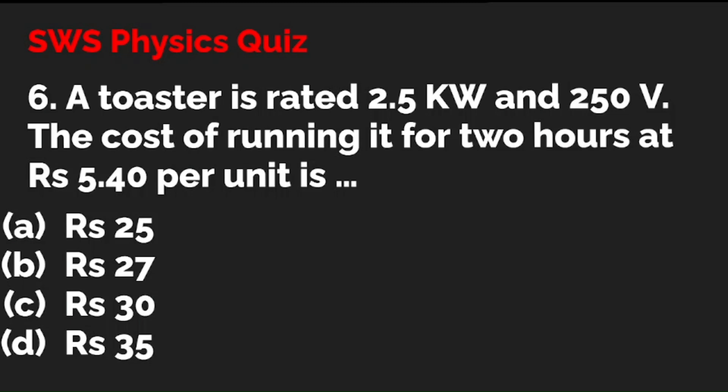Question 6: A toaster is rated 2.5 kilowatts and 250 volts. The cost of running it for 2 hours at rupees 5.40 per unit is — option A: 25 rupees; option B: 27 rupees; option C: 30 rupees; option D: 35 rupees. Do the calculation. The correct answer to question 6 is B — rupees 27.